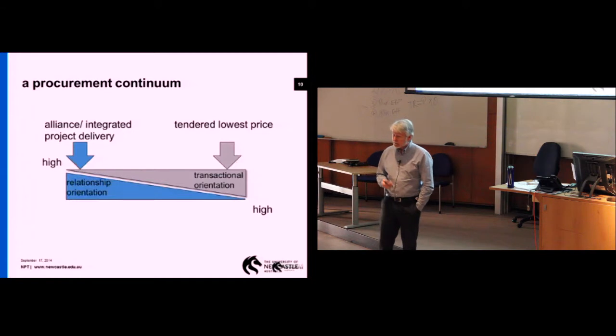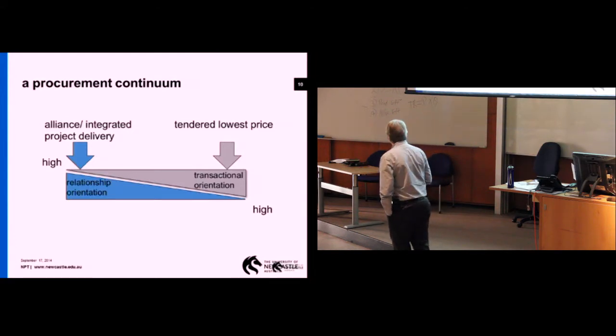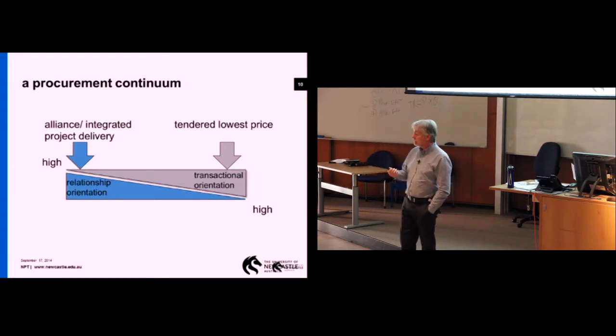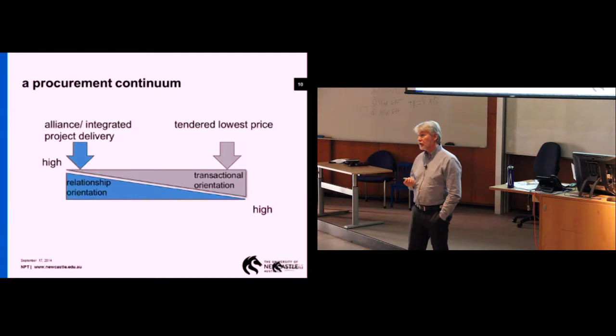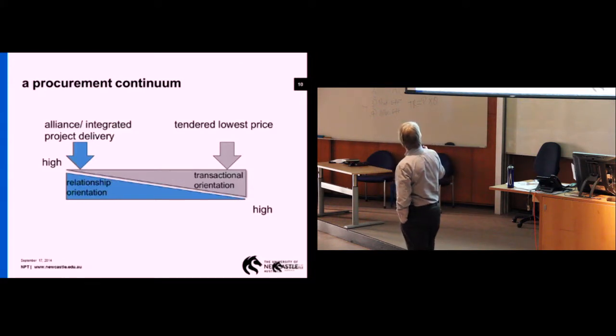A procurement continuum. This really identifies the myriad alternatives that you can have in procurement. I've identified two of the poles. On the right, we've got a tendered lowest price, design-bid-build type of procurement. You can see that it's very high, as I describe it, from a transactional perspective. It's a one-off type of thing, very transactional, very arm's length. In my view, there's not much opportunity to build relationships within that.